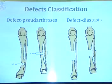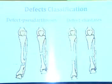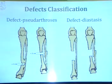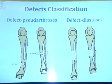Defects classification: pseudarthrosis, defect, diastasis. Each classification should reflect the main features of the disease and contribute to the selection of optimal tactics and technologies of restorative treatment in every specific clinical case.